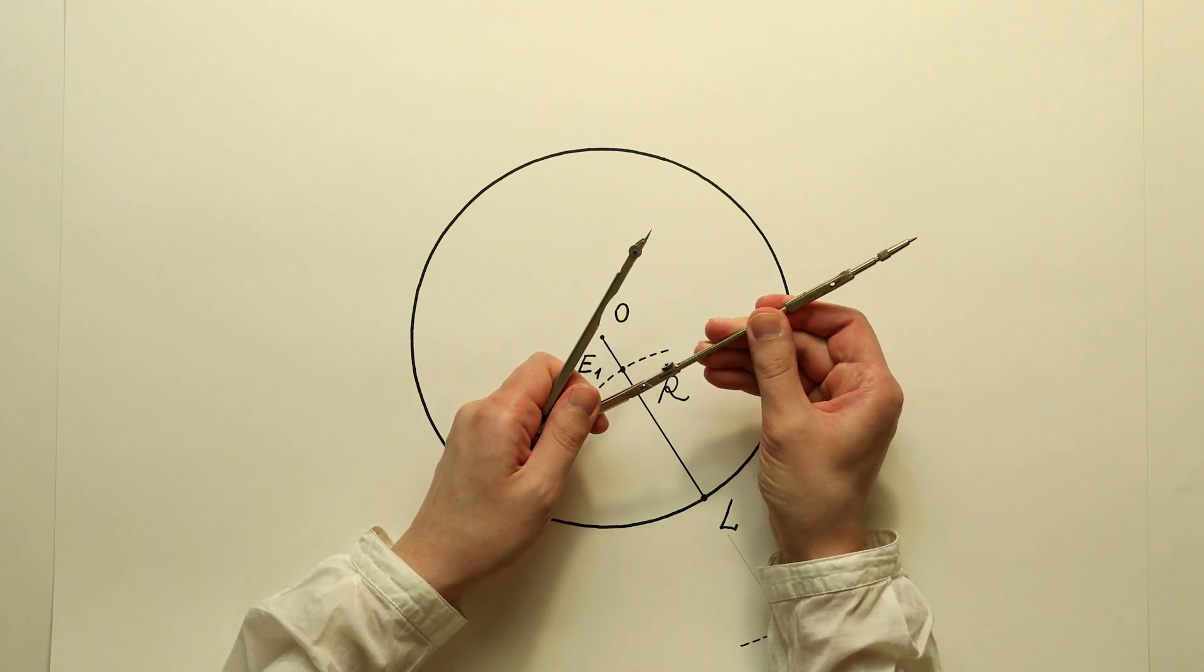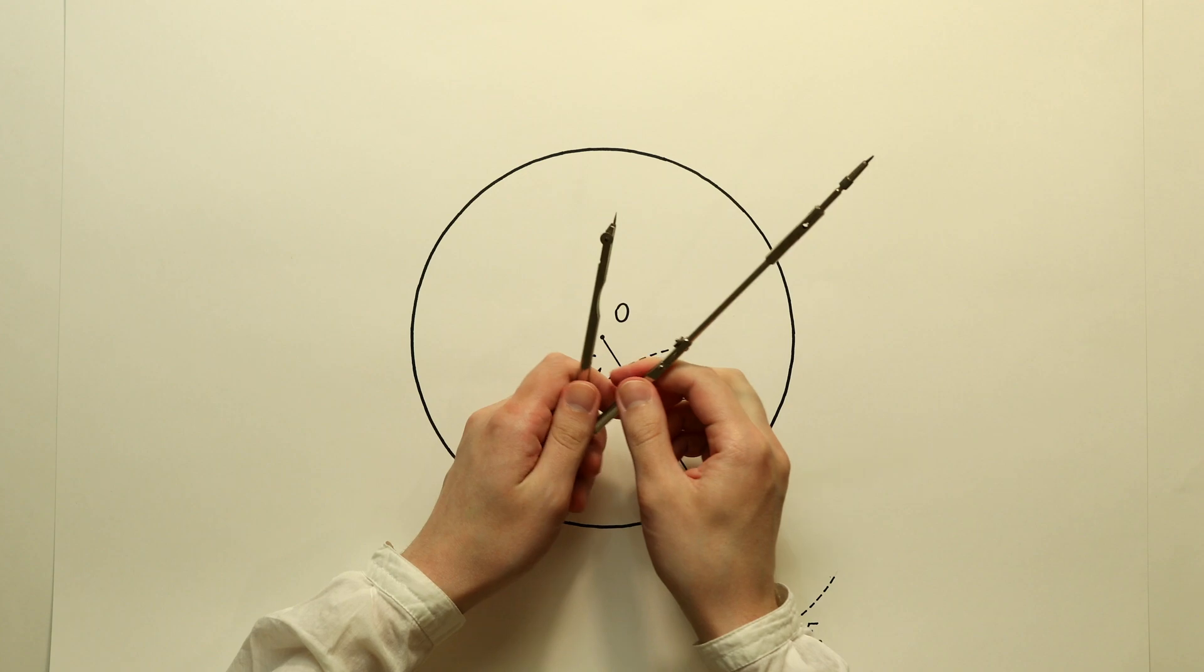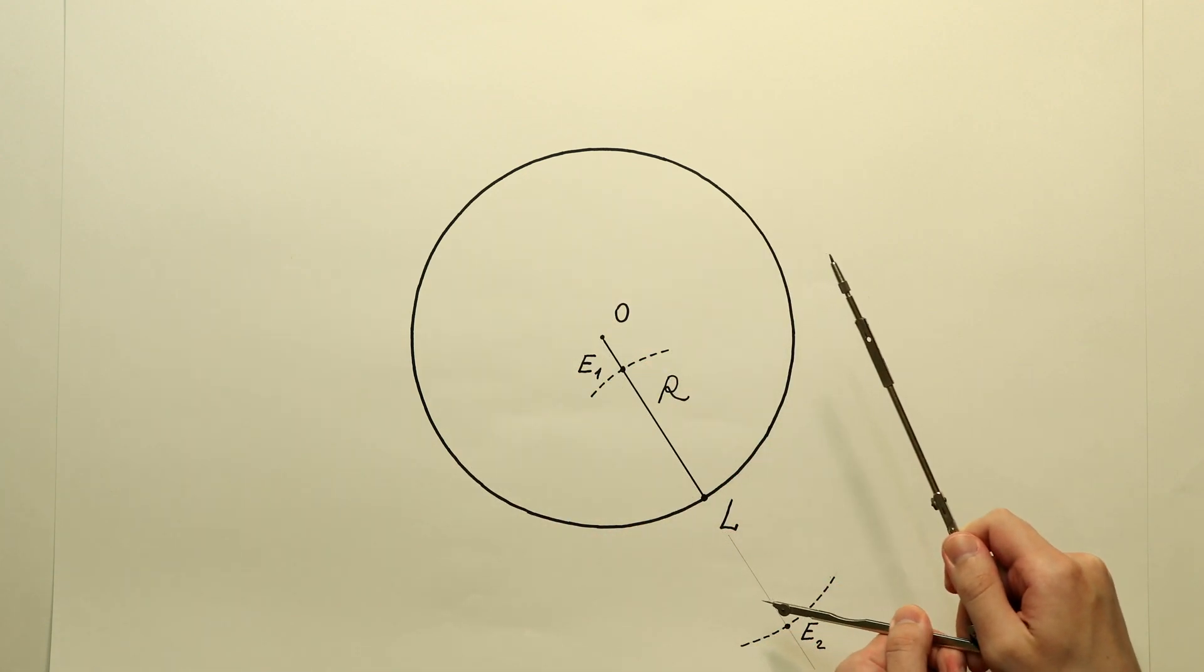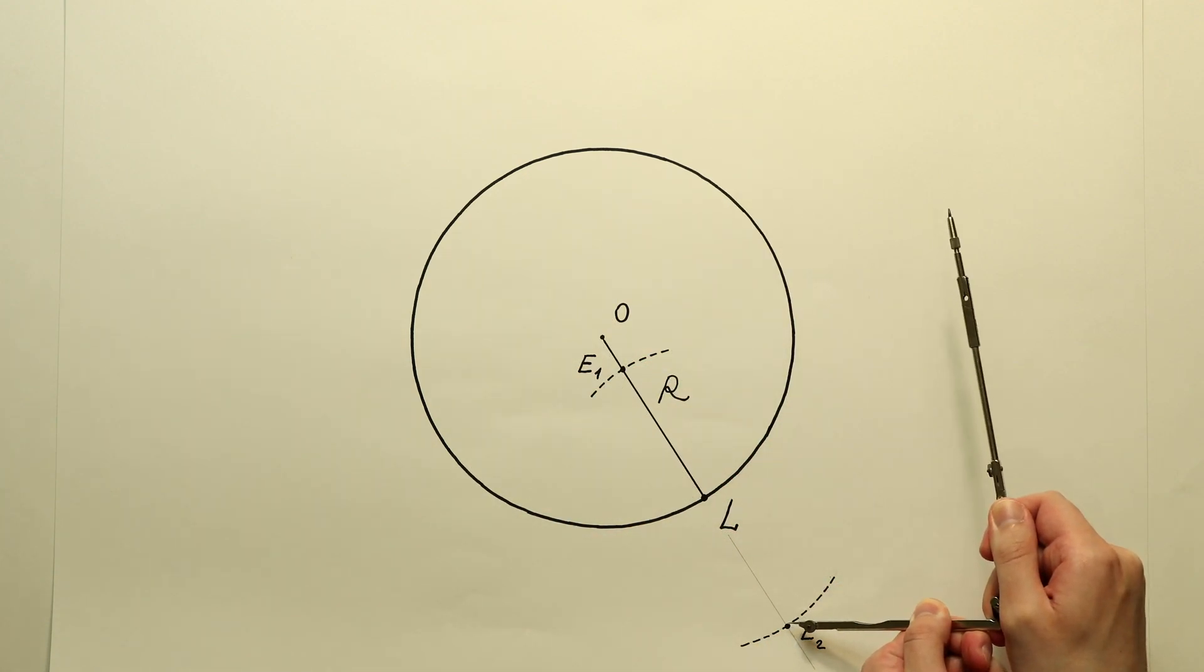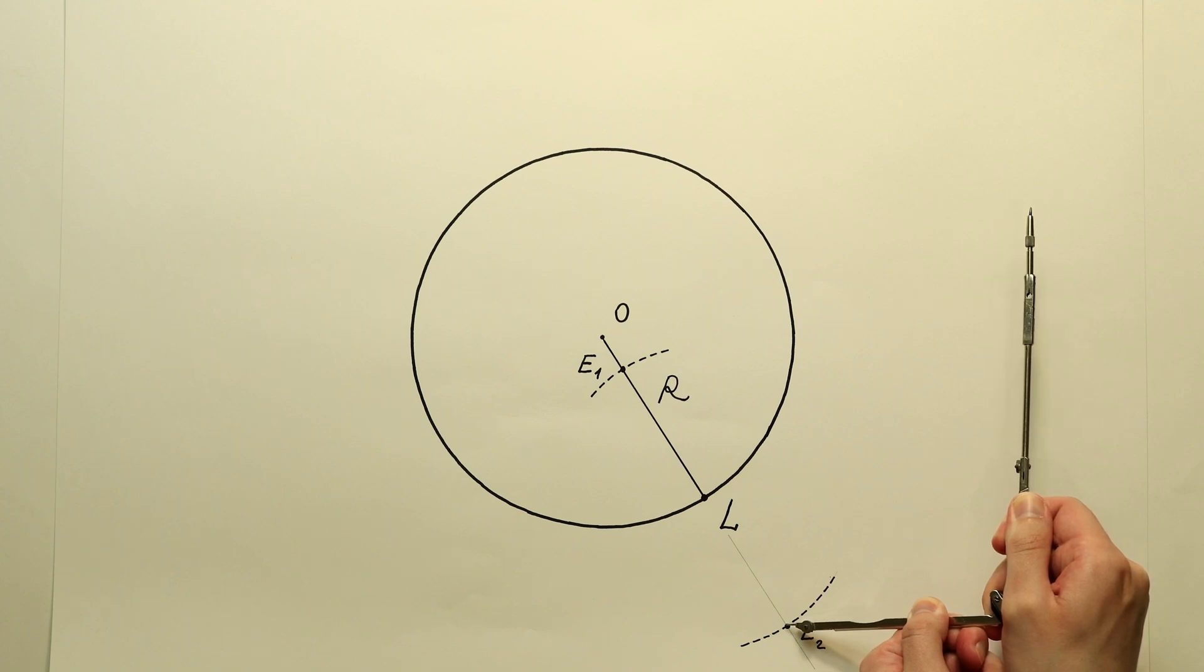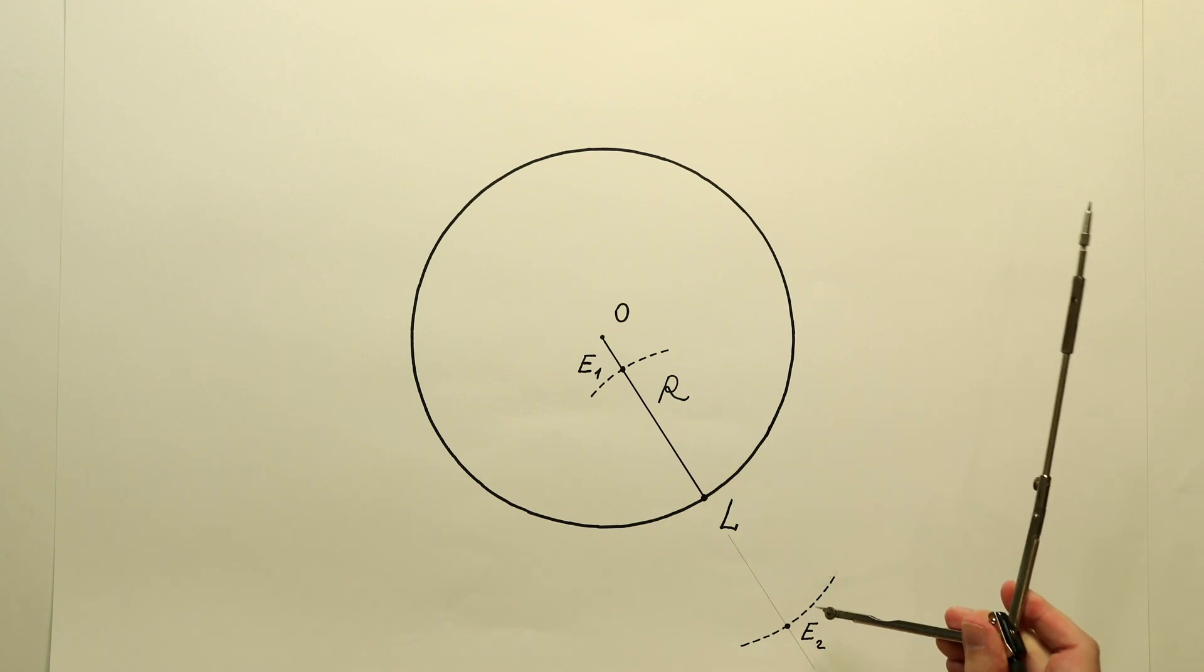Then we need to select a new radius freely on the compass. The selected radius must be greater than the previous one and draw a circle arc of such a radius with the center in point E2.